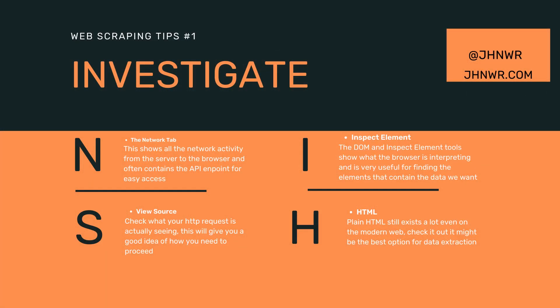The first tip is to make sure you investigate the site properly. Check the view source, use inspect element, and see where the data is coming from before you even start to choose an approach. If you look at the HTML properly first, you might realize the data is actually coming from an API, or there's JSON data nested in the HTML that you can pull out instead of parsing through all the tags — which will improve your scraping and cut down on the amount of code you need.